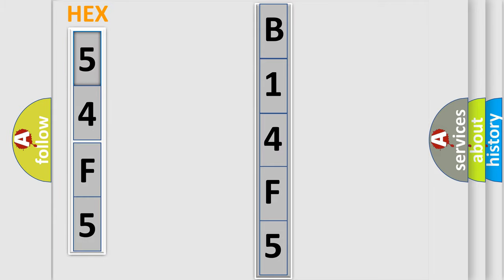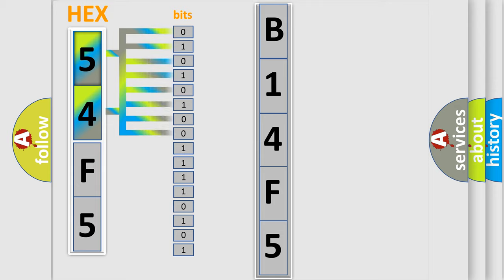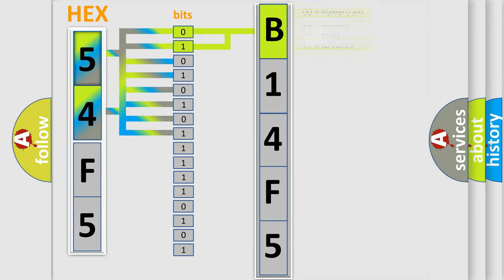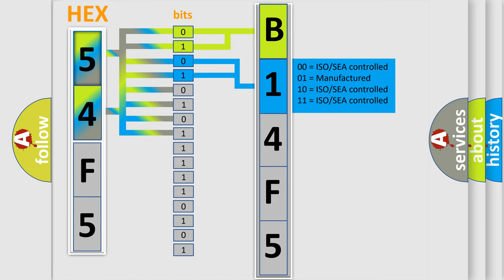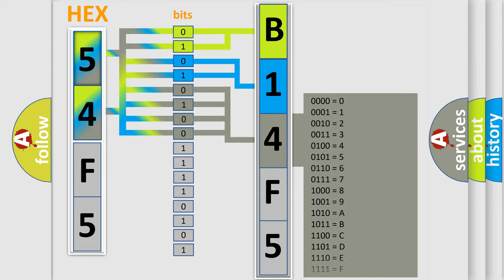The error code is split into two bytes consisting of 16 bits. One bit is the basic unit that each computer works with. The bit has two logical states: zero, meaning low level, and one, meaning high level. By combining the first two bits, the basic character of the error code is expressed. The next two bits determine the second character. The last bits of the first byte define the third character of the code.